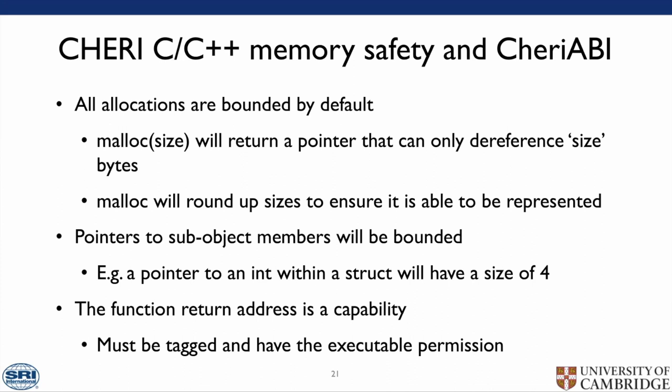CHERI ABI provides C and C++ memory safety — that is, all allocations are bounded by default. So malloc of a given size will return a pointer that can only dereference that many bytes. However, due to the floating-point-style compression of bounds, malloc may need to round up the size to ensure it is representable. Pointers to sub-object members will be bounded — for example, a pointer to an int within a struct will have a size of 4. The function return address is a capability, meaning it must be tagged and have an executable permission. This means that even if there was a buffer overflow, it would be very difficult for an attacker to overwrite the return address with another code capability.